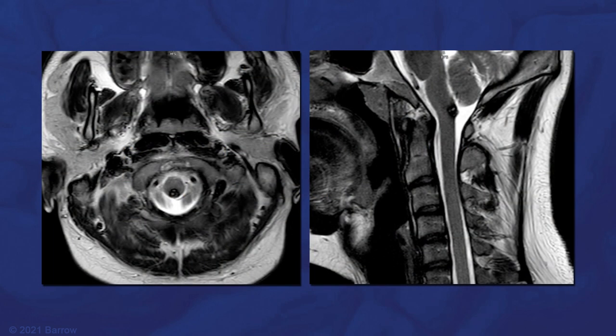Here are the MR findings. On the left, you can see a T2-weighted axial cut with the malformation coming to the surface in the posterior midline. The sagittal view on the right shows the relationship of this malformation to the tonsil and the obex.